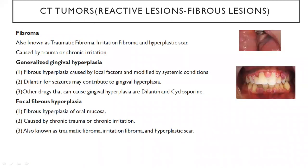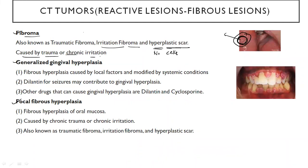First, we are going to talk about fibrous lesions. They include fibroma, gingival hyperplasia, and focal fibrous hyperplasia. Now coming to fibroma — suppose you have a trauma, you might see a growth. That small ball-like structure is called a traumatic fibroma, also known as irritation fibroma or hyperplastic scar. Hyperplasia means increase in number of cells, so here there is an increase in number of cells forming a lesion. It can be caused due to trauma or chronic irritation.